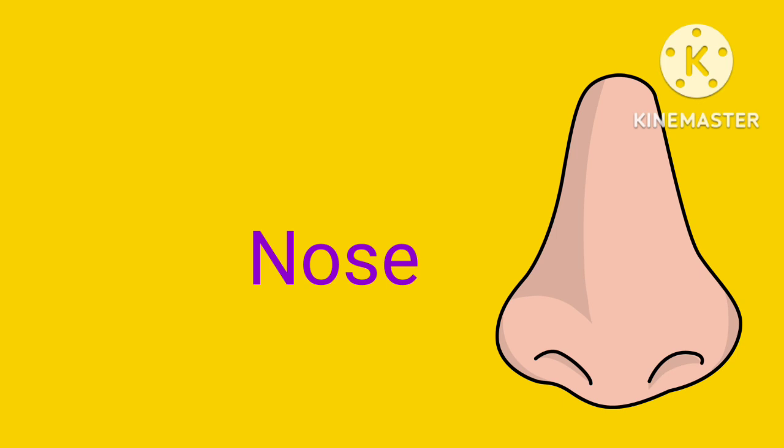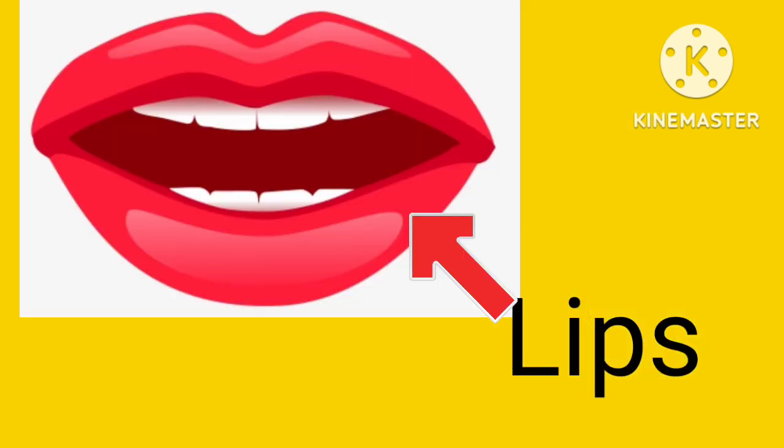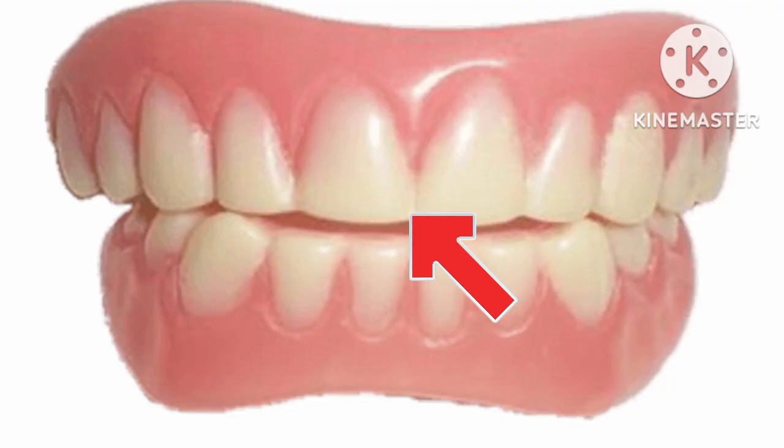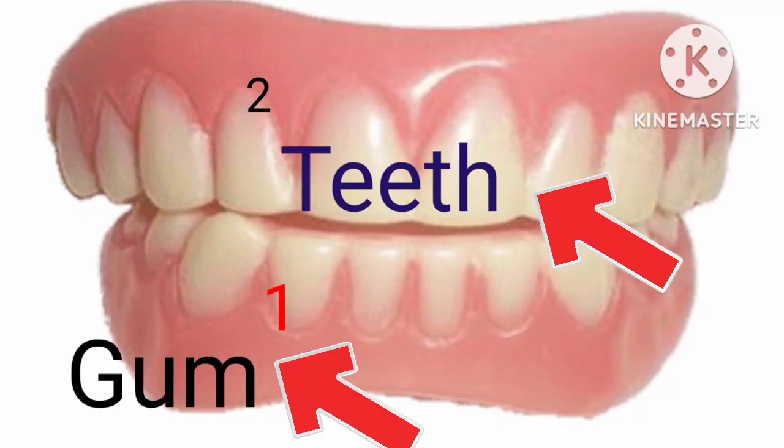Nose: N-O-S-E. Nose. Lips: L-I-P-S. Lips. Gum: G-U-M. Gum. Number two: Teeth. T-E-E-T-H. Teeth.